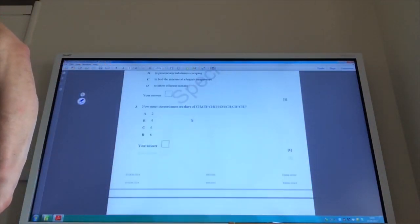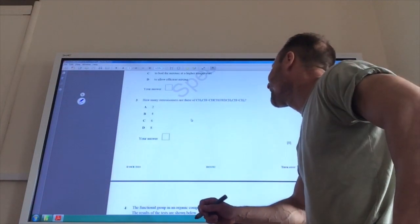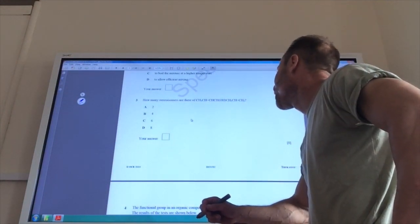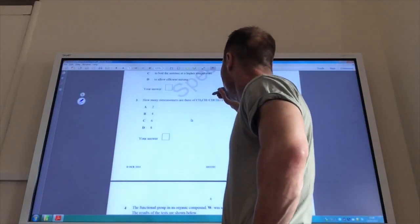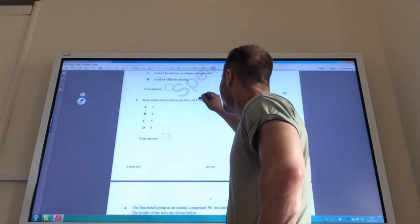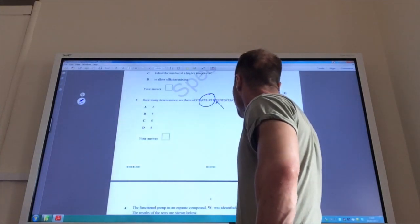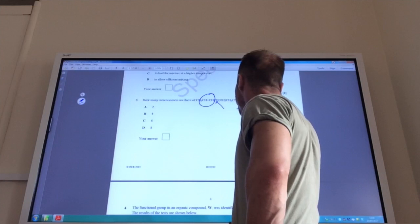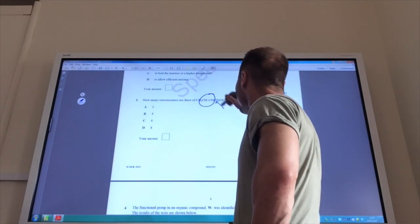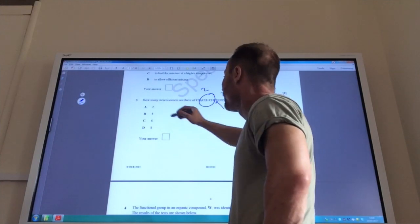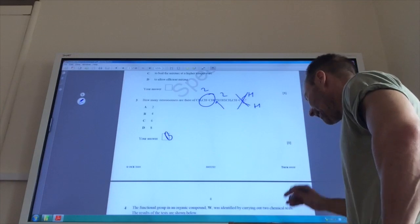Next one, how many stereoisomers are there likely to be of this molecule here? Well, if you check it out, you have got EZ isomerism around that. That carbon there is a chiral center. But you can't get any EZ isomerism there because you've got two H's on the end there. So you get two there and two there. So the answer is four. So it is B again.